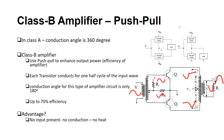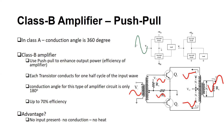In today's module, we are going to focus on the class B amplifier, also called the push-pull amplifier. Recalling from class A: the conduction angle is 360 degrees. The transistor inside the amplifier conducts the signal for the full 360 degrees, meaning both halves of the input signal. That's why the conduction angle is 360 degrees.